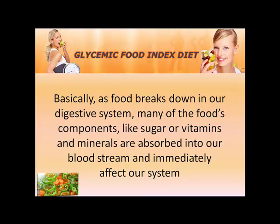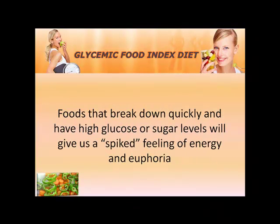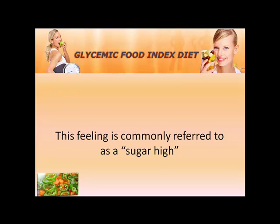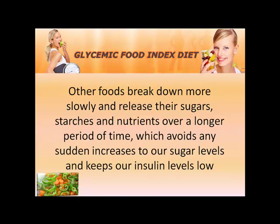Basically, as food breaks down in our digestive system, many of the food's components like sugar or vitamins and minerals are absorbed into our bloodstream and immediately affect our system. Foods that break down quickly and have high glucose or sugar levels will give us a spiked feeling of energy and euphoria. This feeling is commonly referred to as a sugar high. Other foods break down more slowly and release their sugars, starches and nutrients over a longer period of time, which avoids any sudden increases in our sugar levels and keeps our insulin levels low.